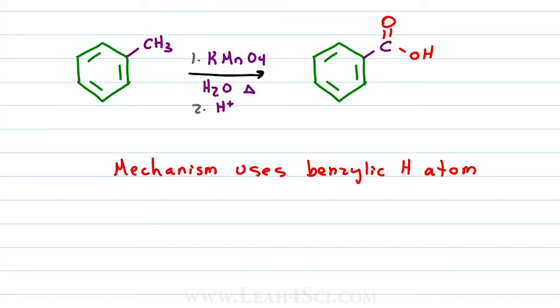And so without worrying about learning the mechanism, just imagine that the oxidizing reagent which could be some version of chromic acid or potassium permanganate, grabs onto the benzylic hydrogen as a means of latching onto the molecule, cuts everything else off and then oxidizes it all the way to a carboxylic acid.